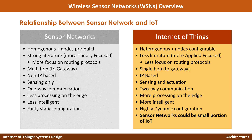So overall, even though there is no consensus among the community, roughly speaking a sensor network could be considered as a small portion of IoT. That is the key difference between sensor networks and Internet of Things.